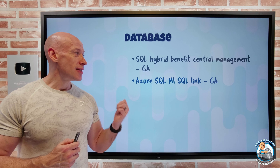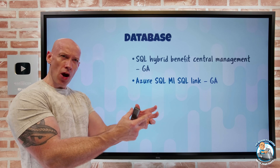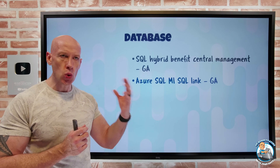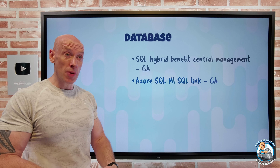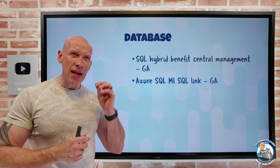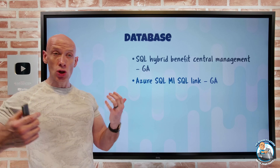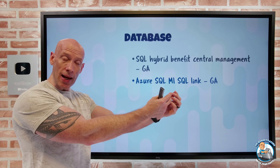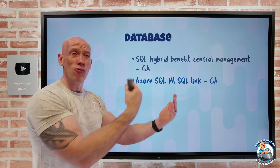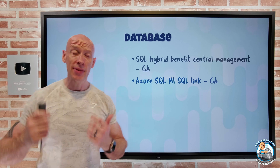Azure SQL Managed Instance SQL Link has gone GA. With the SQL Link, I've got my Azure SQL MI running in Azure, and then SQL Server running somewhere else — 2016, 2019, or 2022 — whether on-premises, in a regular VM, or in a VM in another cloud. This gives me near real-time replication, which is useful as part of a migration or for an ongoing replication, such as a read replica for analytics and reporting so that read overhead doesn't hit my primary workload.